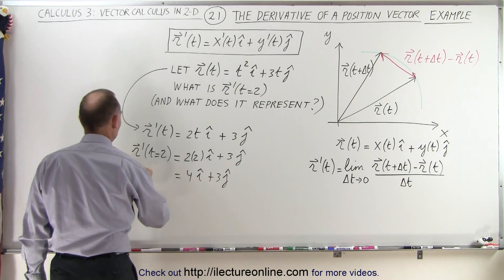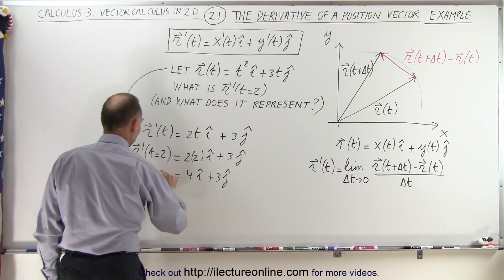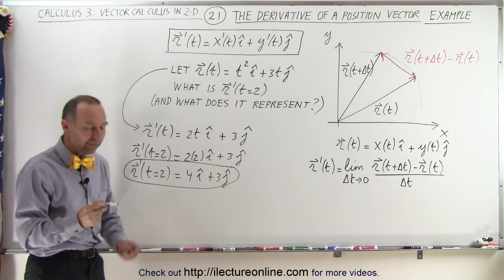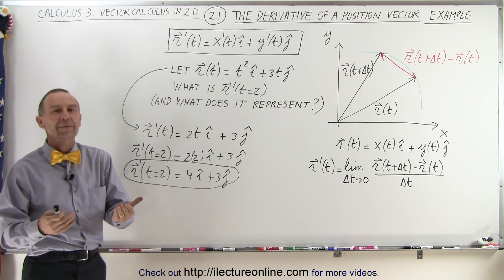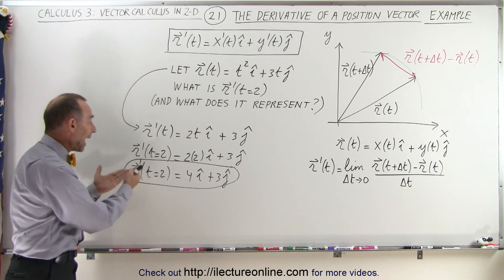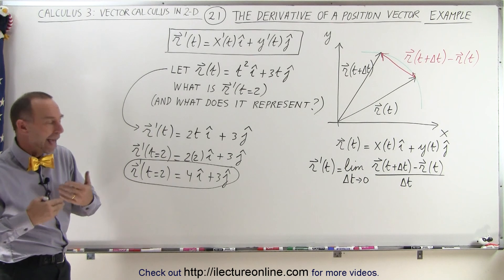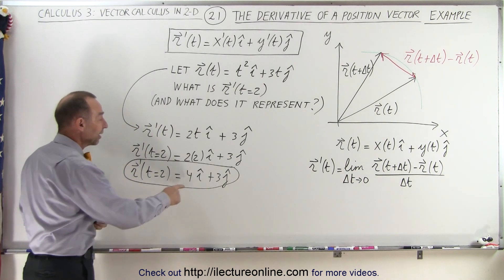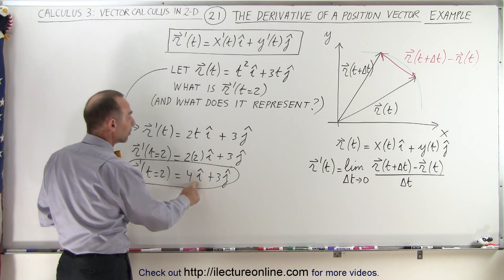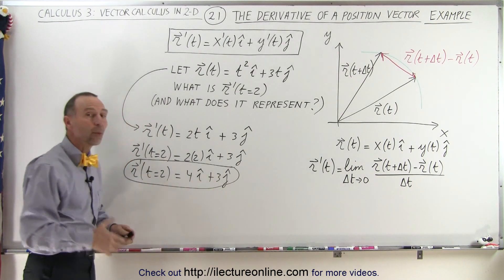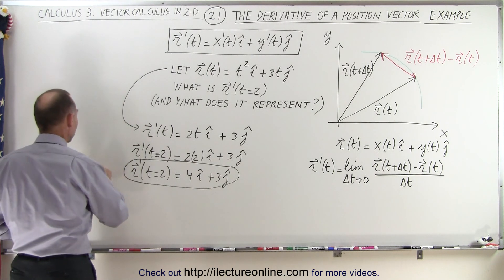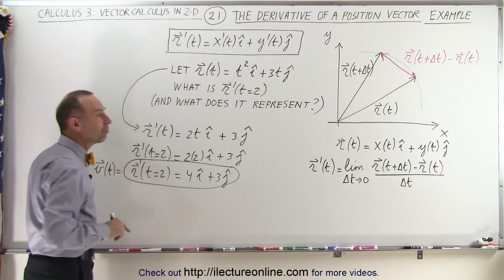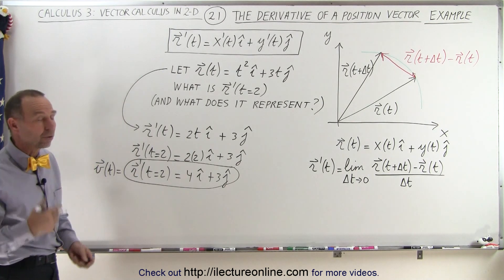So what does that actually mean? The derivative of the position would be the velocity. So that means that this here actually represents the velocity of that particle at t equals 2, at time equals 2 seconds, for example. That means that this would be the velocity of the particle in the x direction and this would be the velocity of the particle in the y direction. So we can say that v as a function of time is equal to the derivative of the position vector, and of course this in itself would be a vector as well.